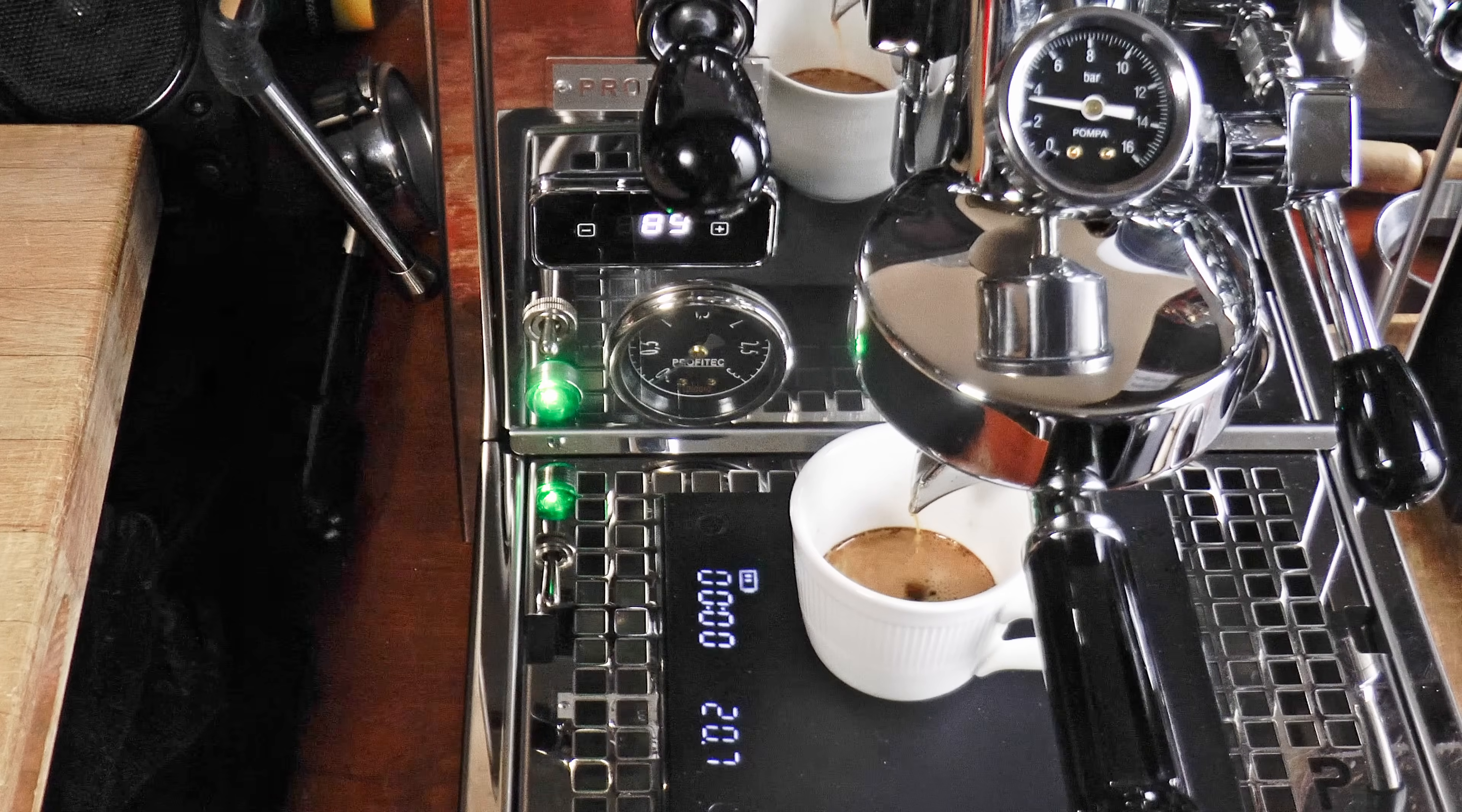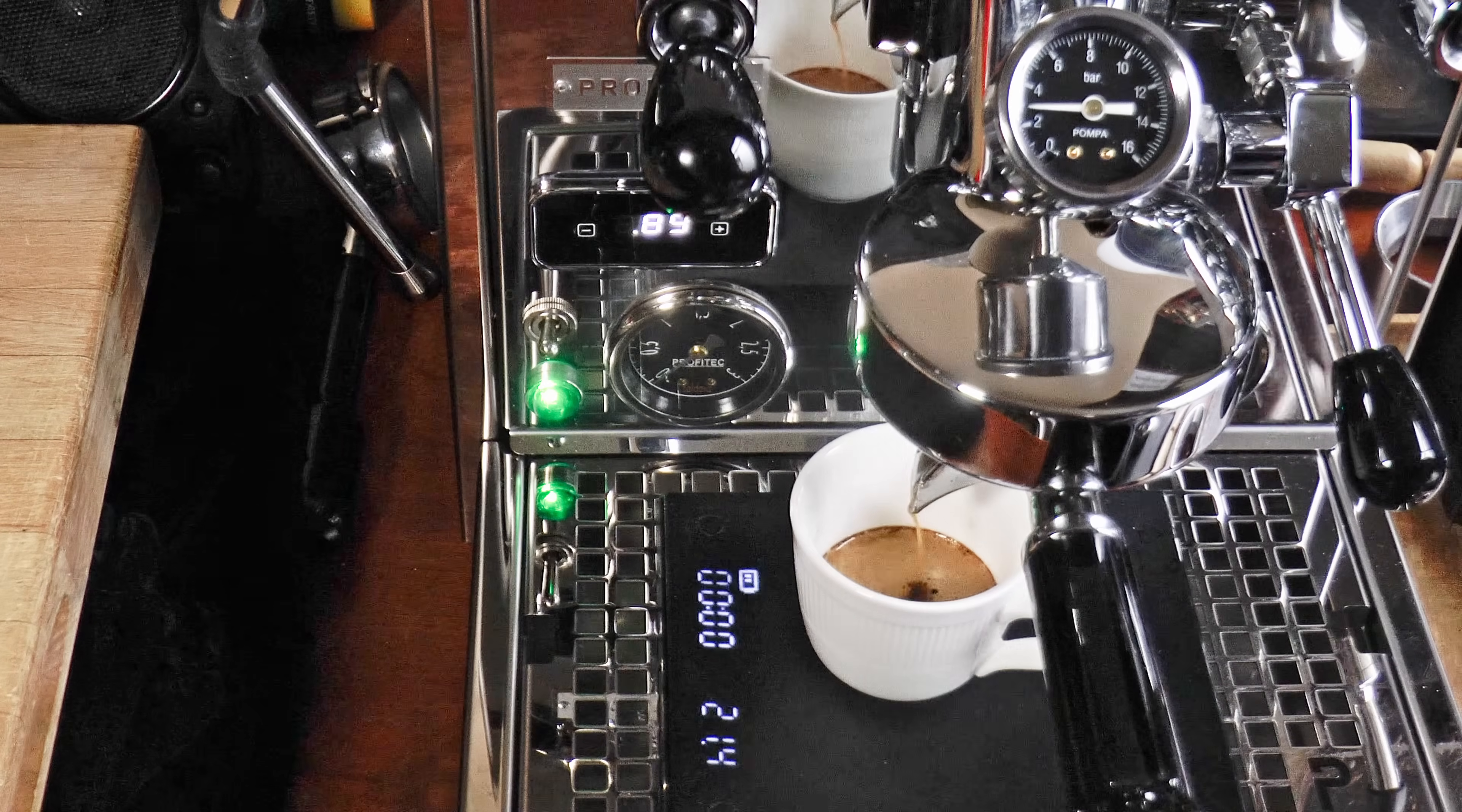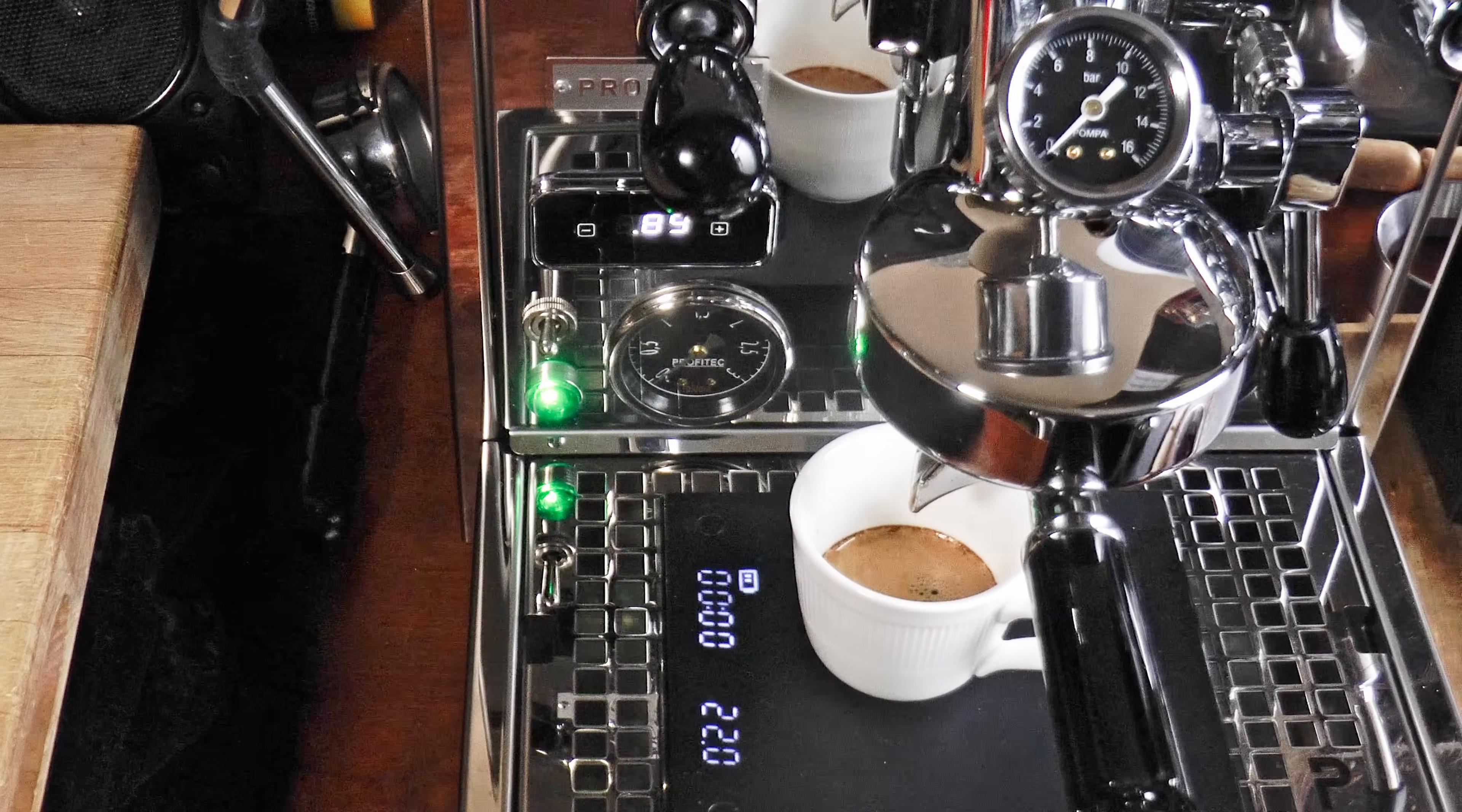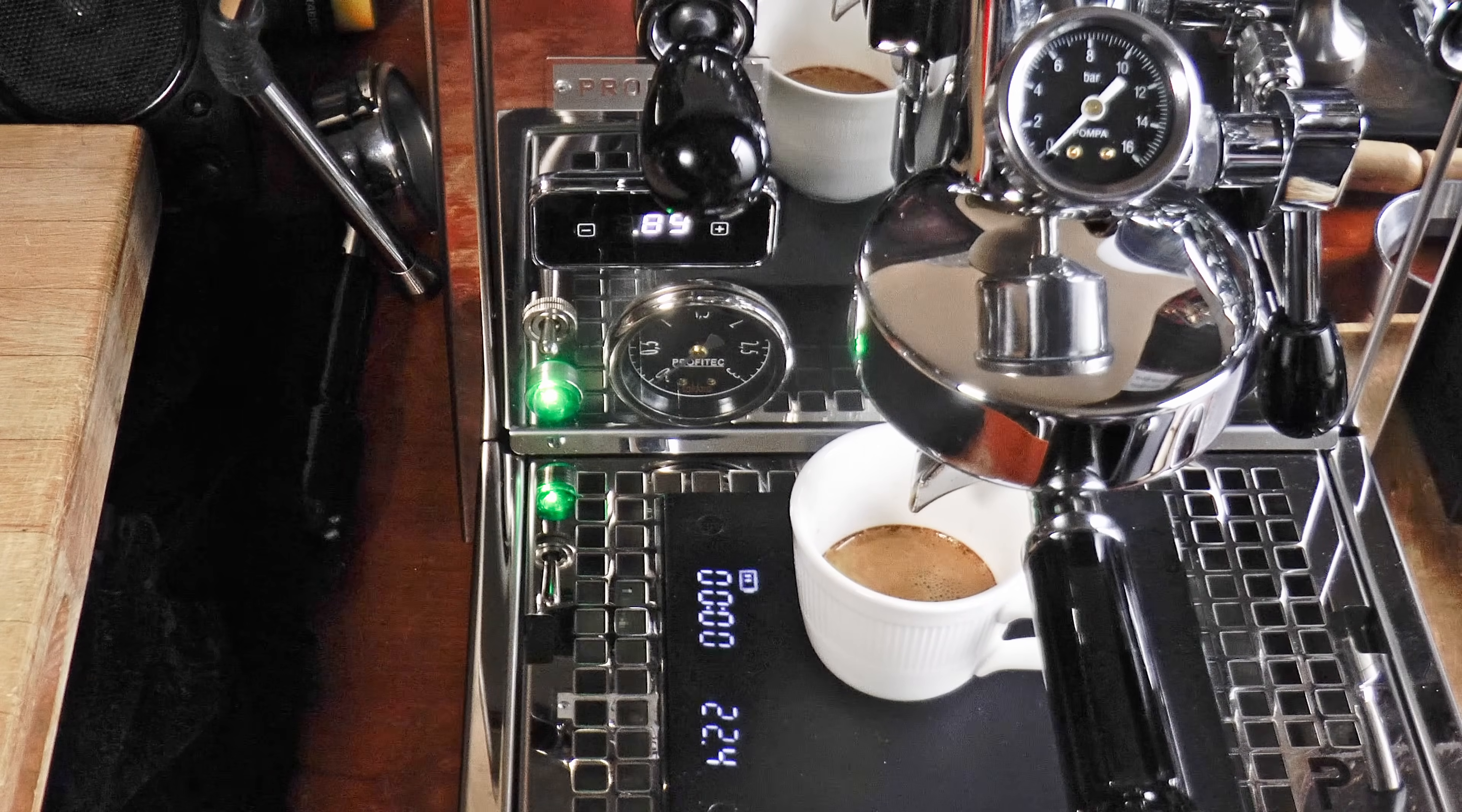You don't need a Slayer, you don't need mains pressure, and you don't need a flow control kit. Just a group mounted pressure gauge and your hand on the switch.